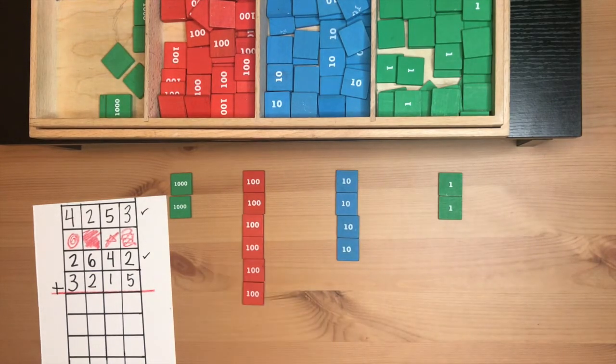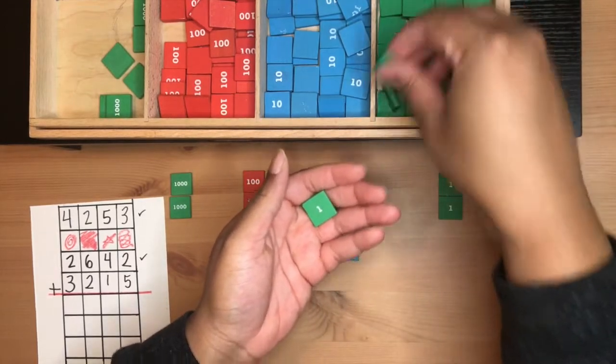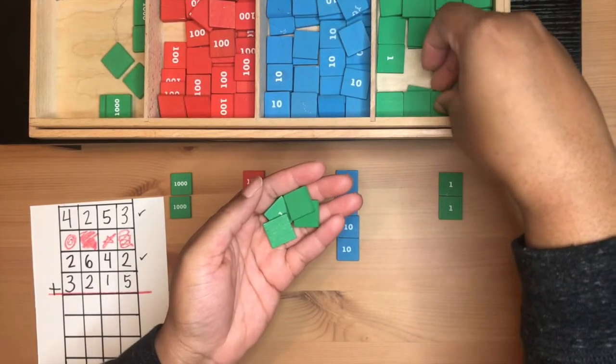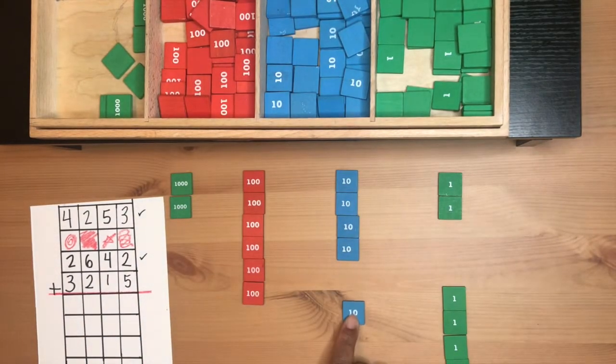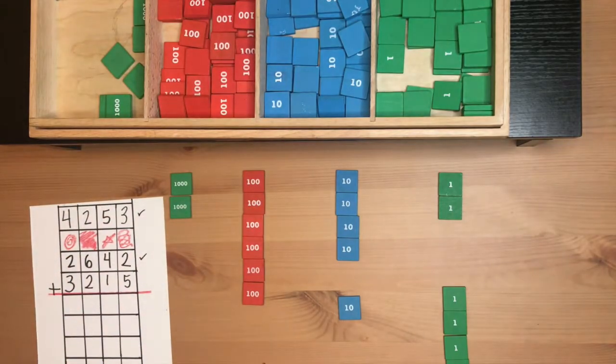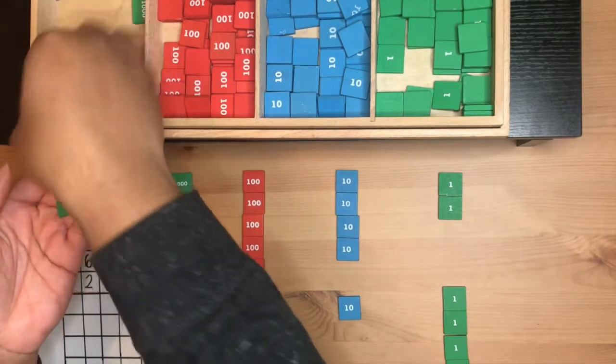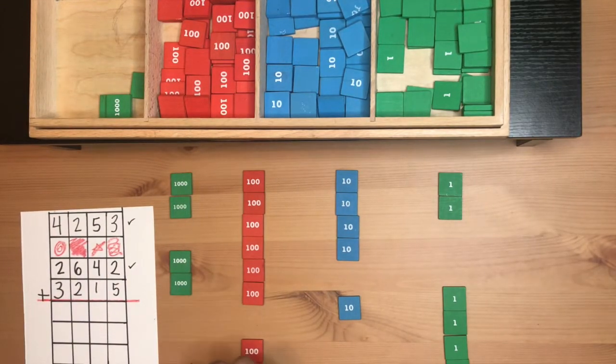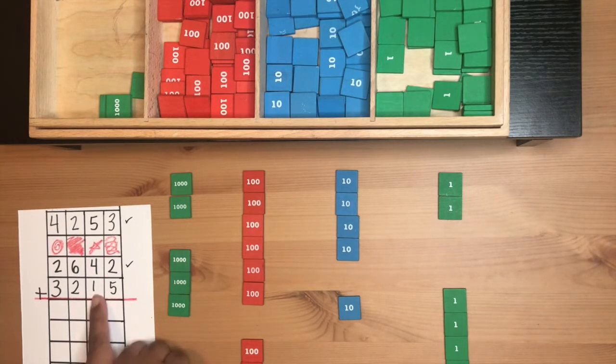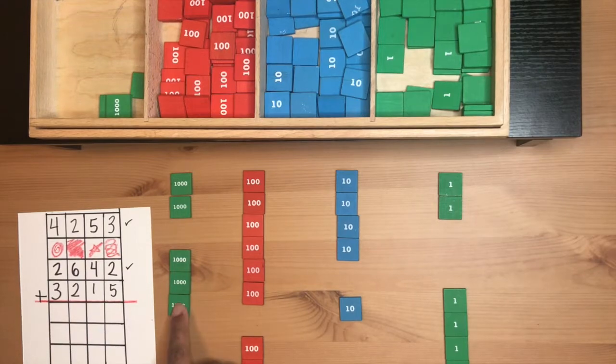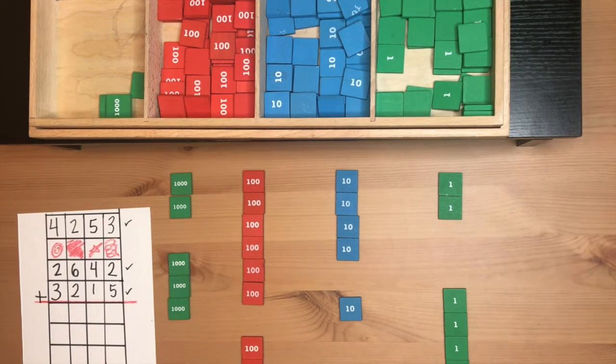Let's get ready to build our new number underneath, starting with the units. We need five units: one unit, two units, three units, four units, five units. Three tens, two hundreds, eight thousands. Four units. Once it's verified, we put a check.